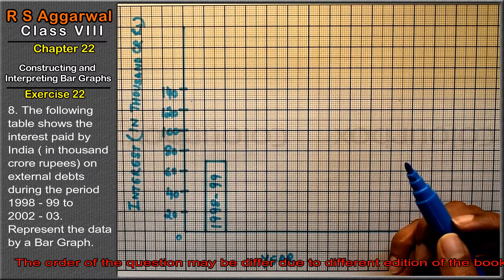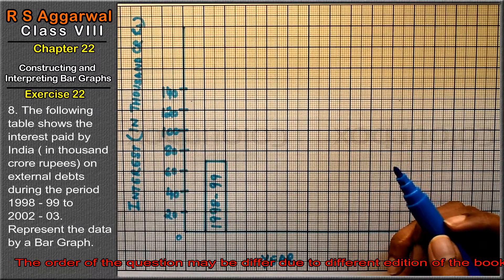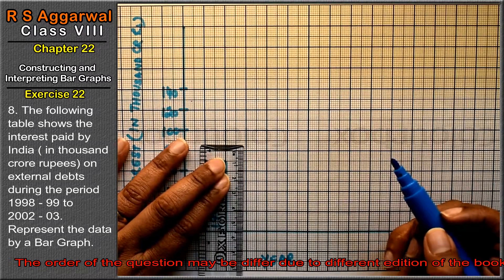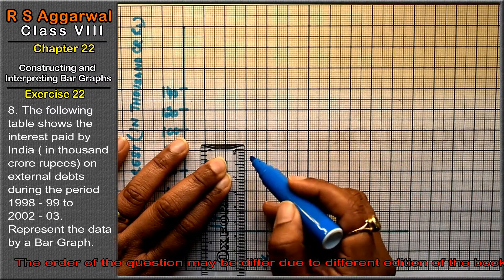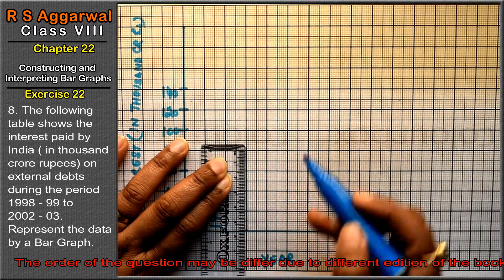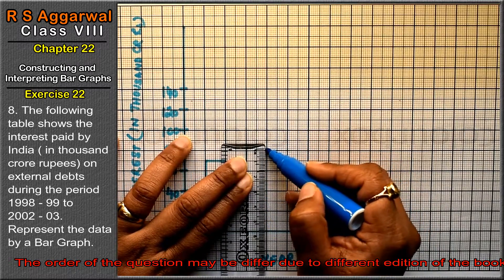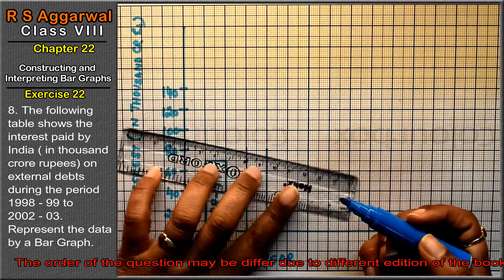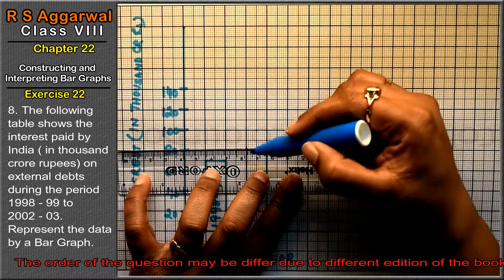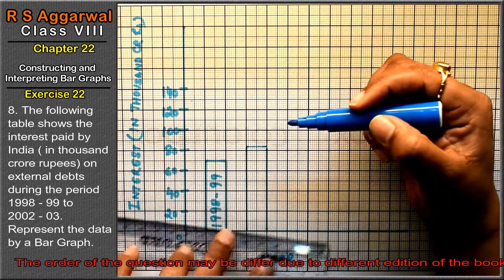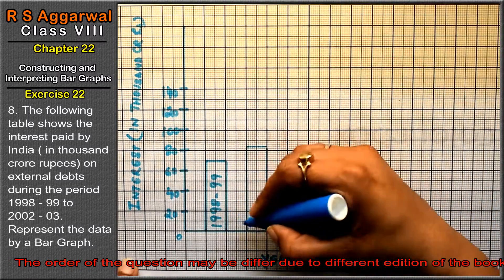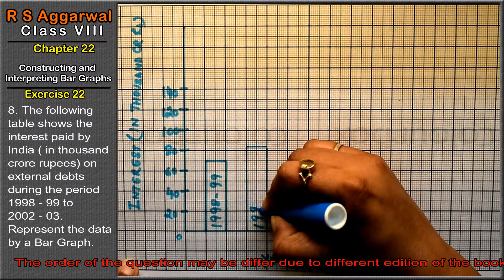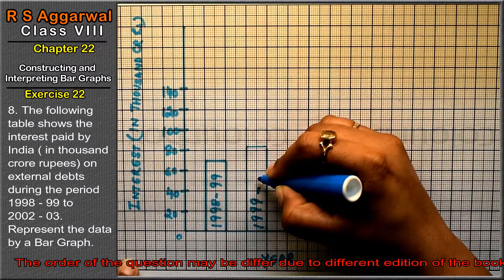Now from 1999 to 2000 it was 84, that means 42 divisions. So 40 and 2, and here we will write it from 1999 to 2000.